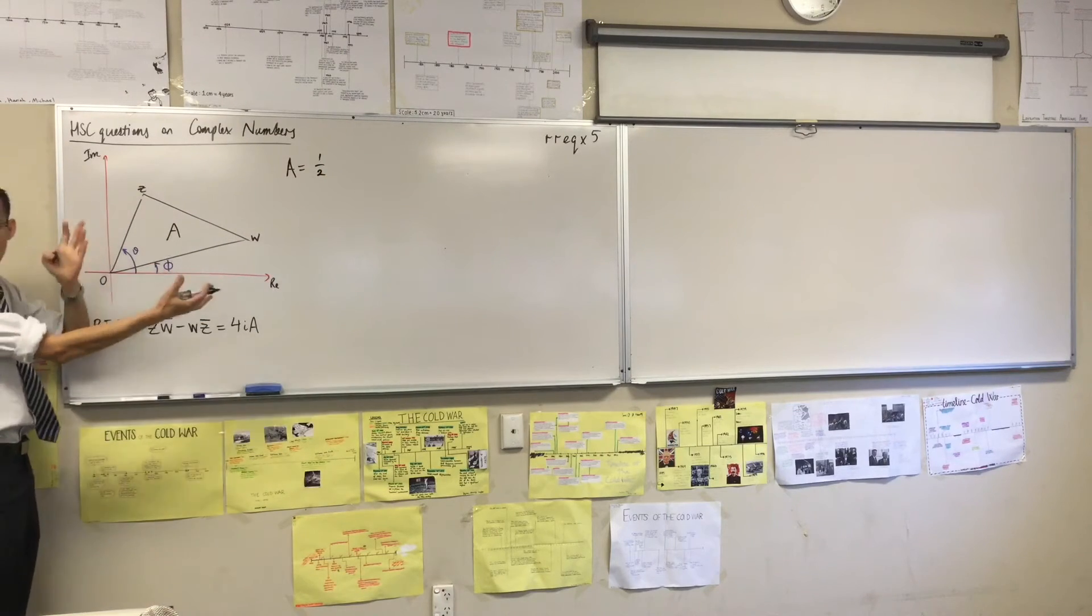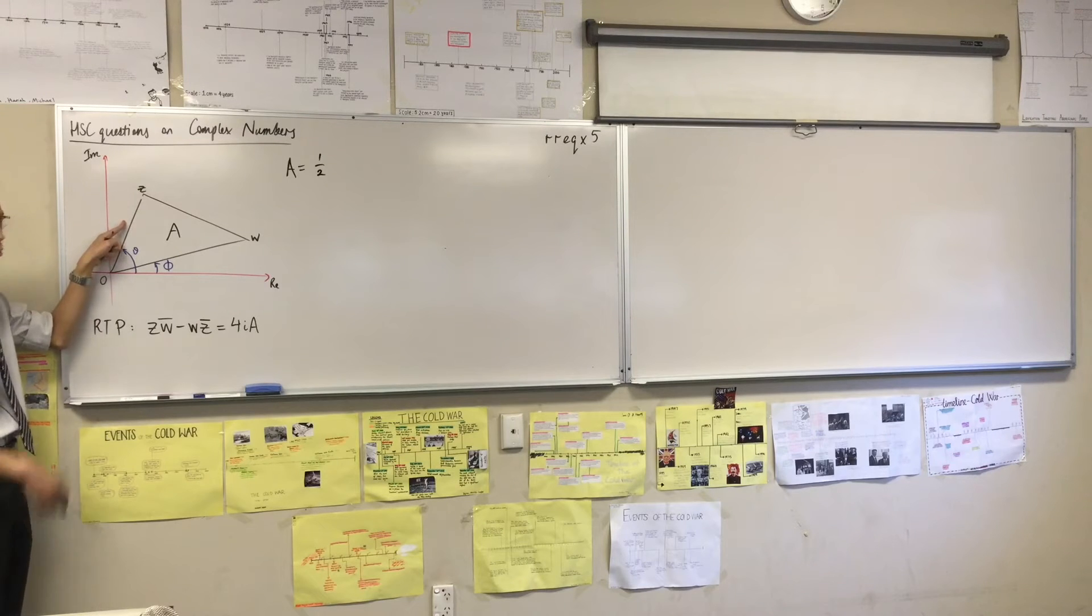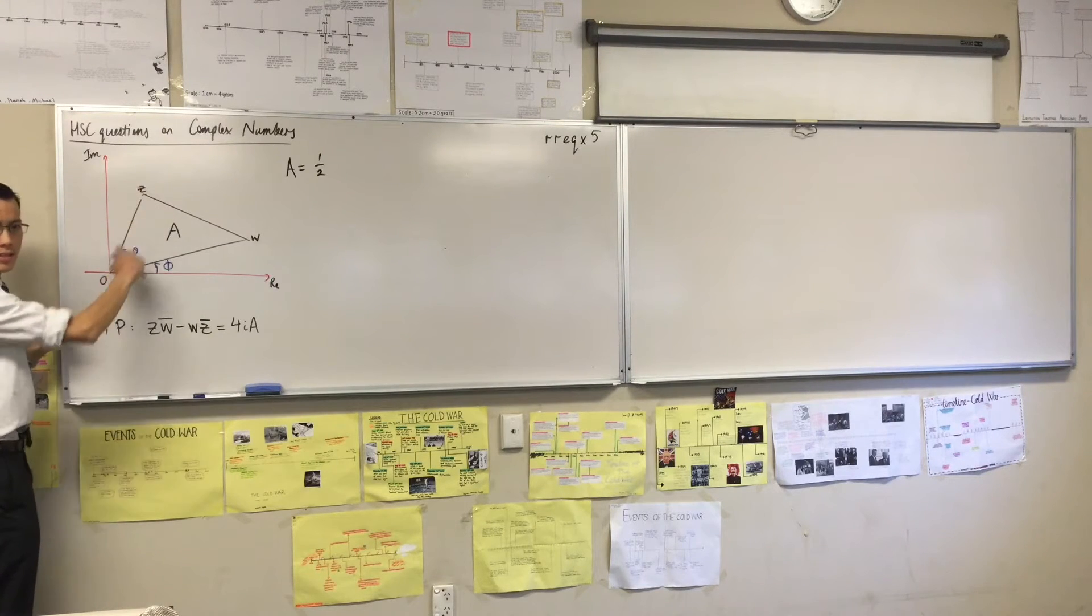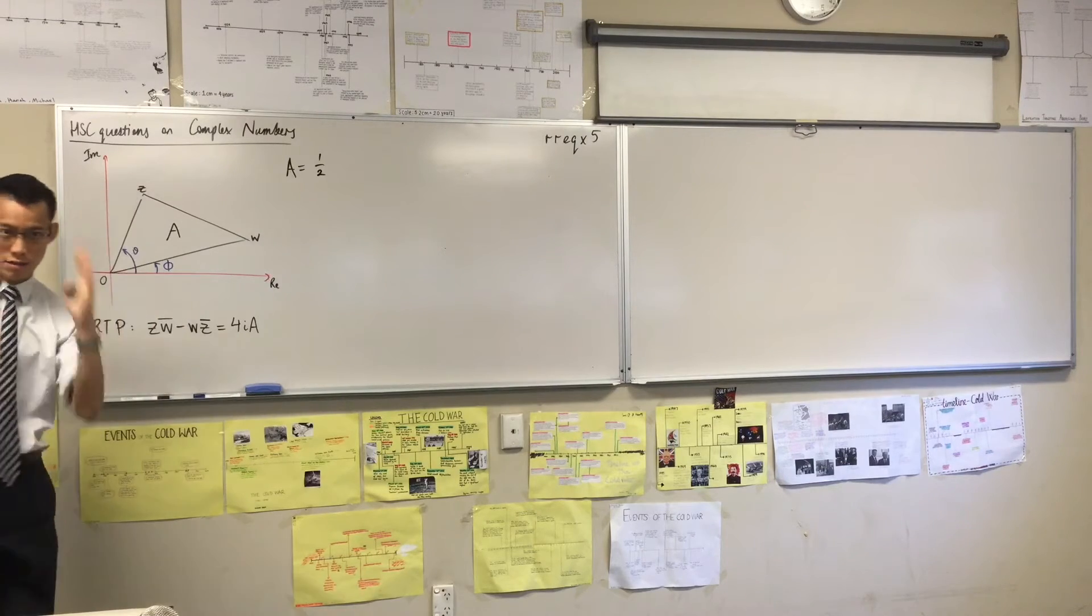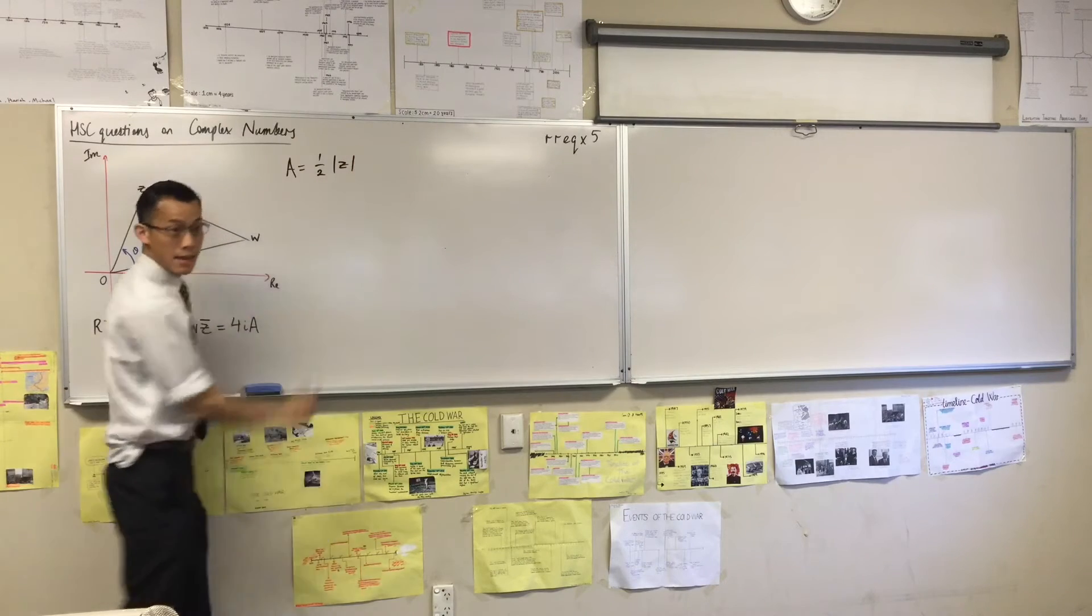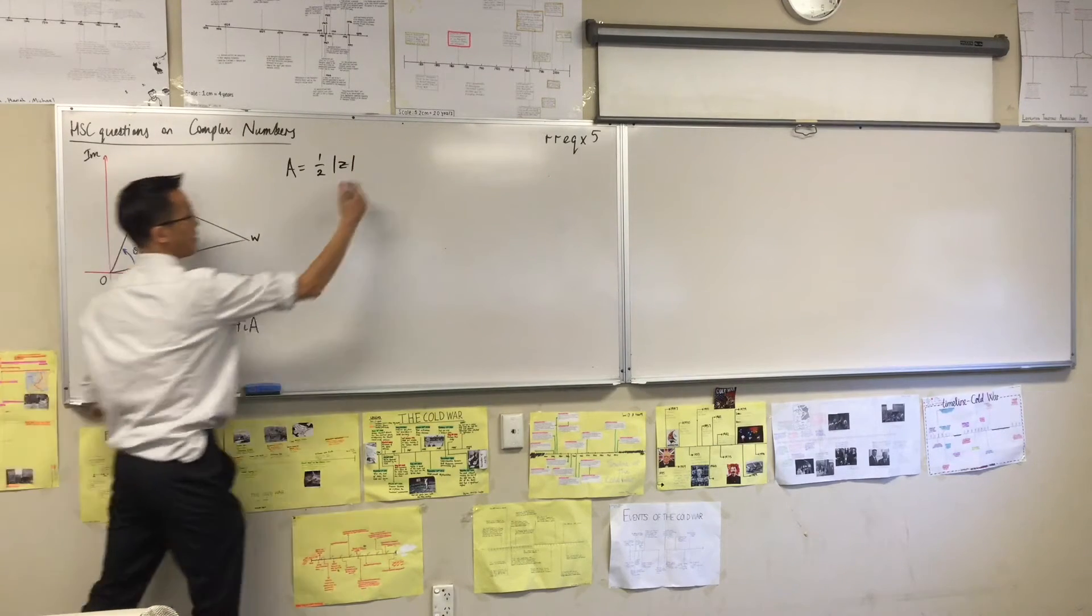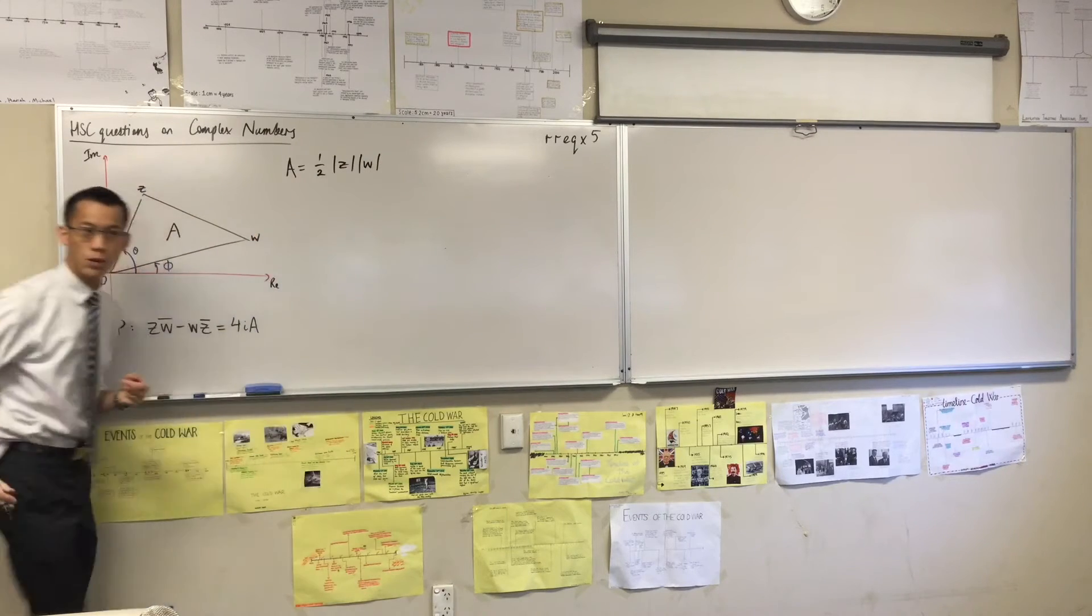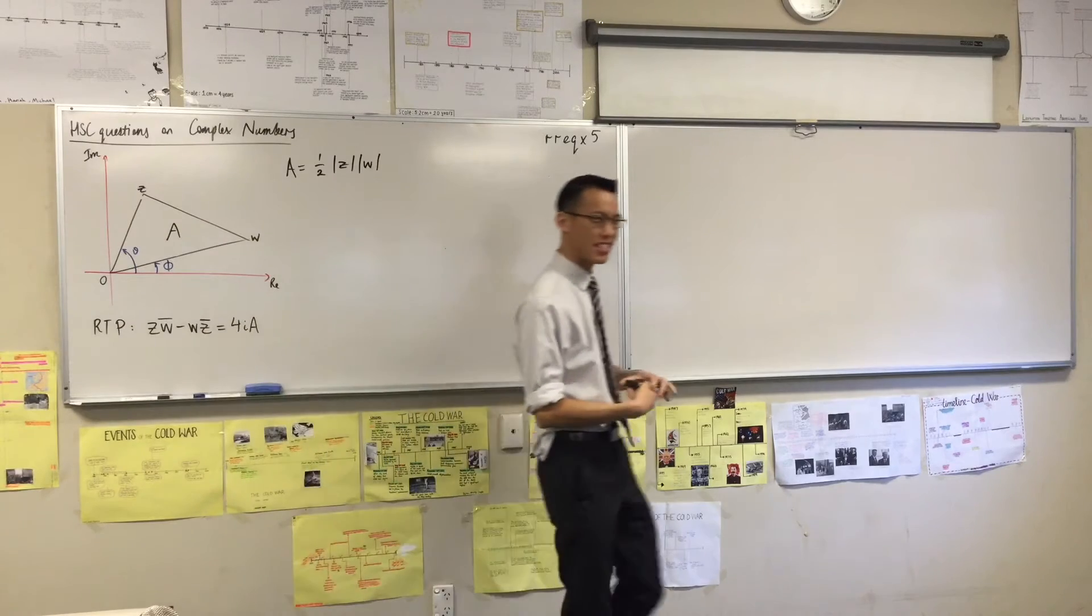So I'm going to write half A, it doesn't matter which one's which. We'll call this one over here A. So by definition the length of this side is mod Z, or the absolute value of Z. So I'm just going to say that's A. If this one down here is B, then I'm going to say that length is W the modulus.